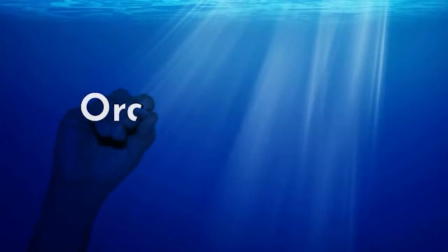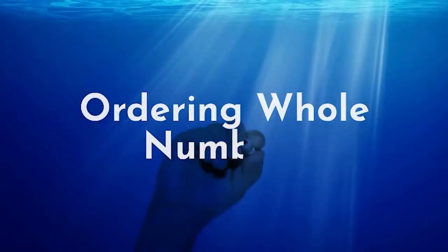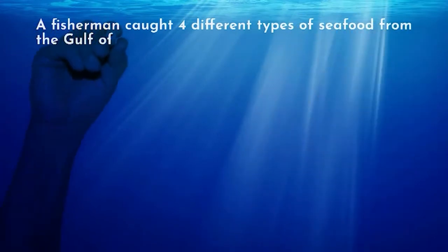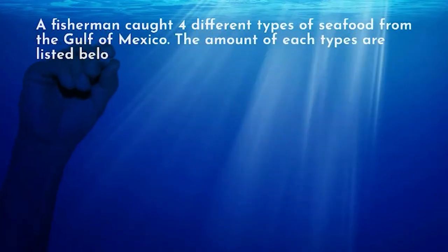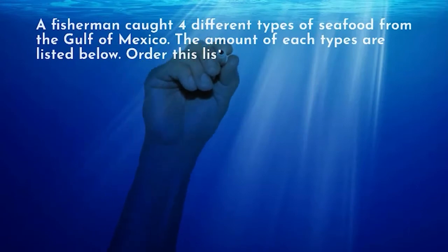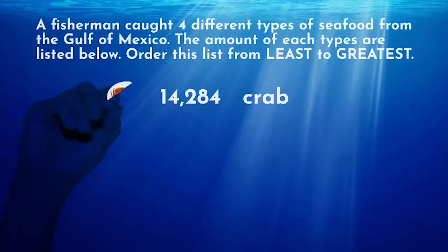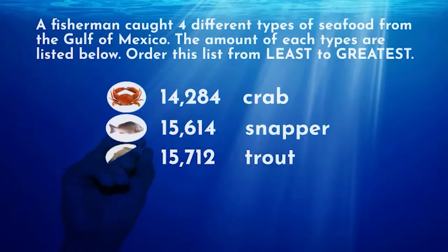Welcome to Underwater Math! Let's chat about ordering whole numbers today. Let's start with our real world problem: a fisherman caught four different types of seafood from the Gulf of Mexico. The amounts of each type are listed below. Order this list from least to greatest. We need to take a close look at our list to first find the...